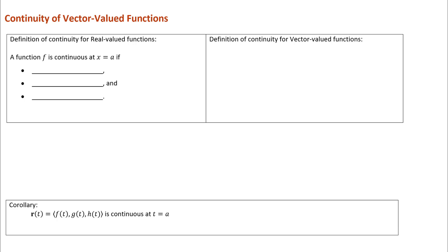We're going to look at the definition of continuity for vector-valued functions. I've typed a skeleton to help you recall the definition of continuity for real-valued functions — functions like y equals f of x from calculus one. There are three criteria you're always going to be looking for when determining whether a function is continuous at a specific value x equals a.